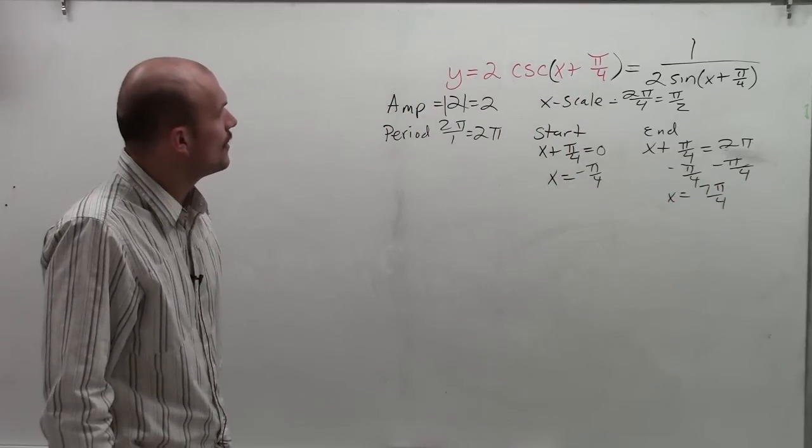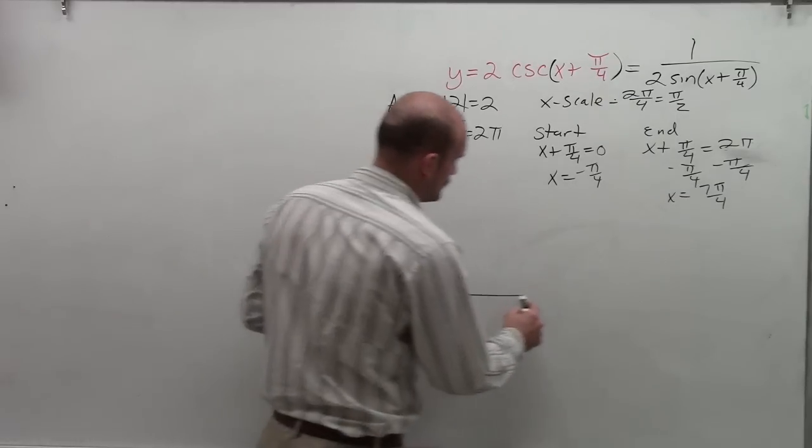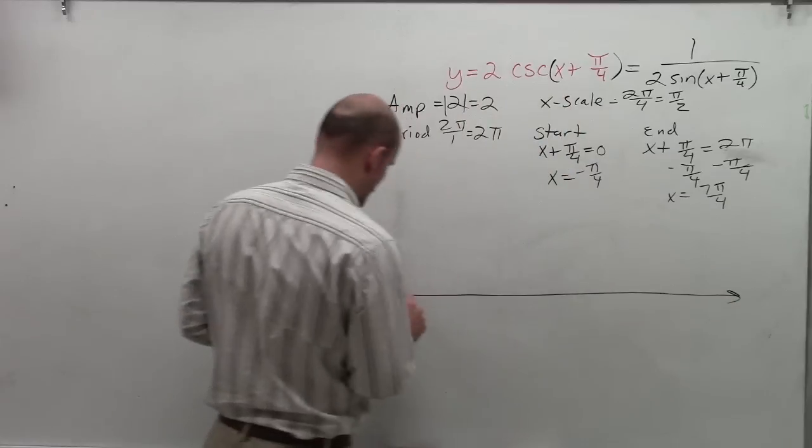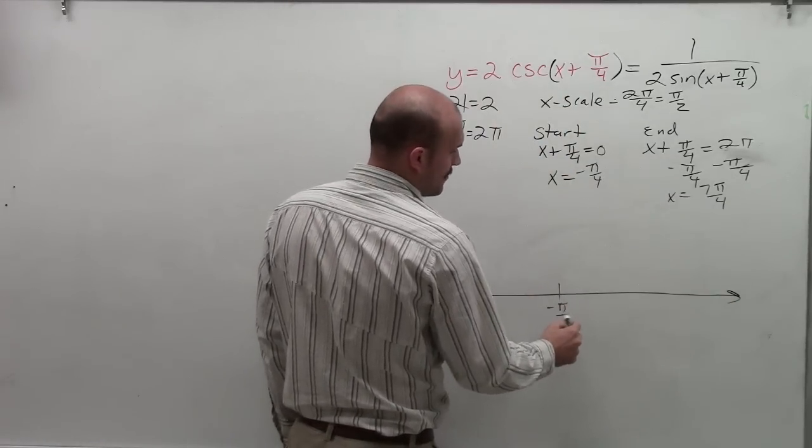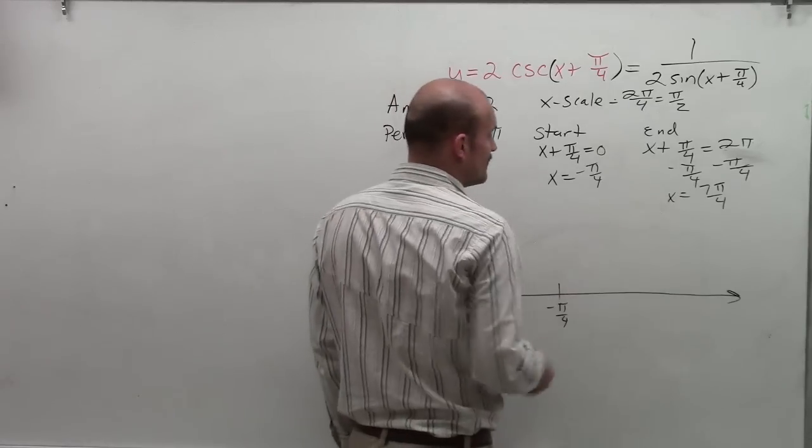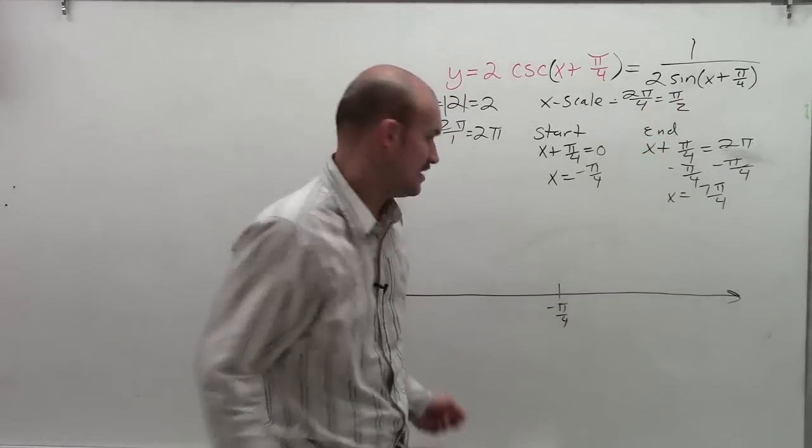OK. So I have, let's go ahead and graph this out. So I will set my x-axis. And I'm just going to have my start right in the middle. So my start is going to be at negative pi over 4. Then I'm going to have four critical points, each being by a period of pi over 2.